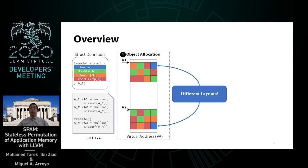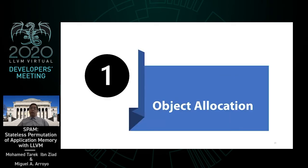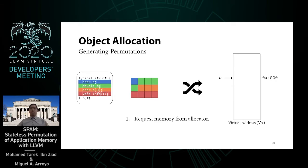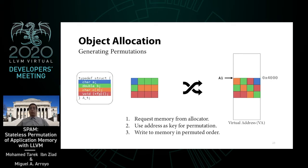So how can SPAM achieve this? Let's start with what happens during object allocation. On the left we have the struct and its corresponding memory layout, and our goal is to get to the figure on the right, where the struct contents are permuted. To do so, we first request the needed memory from the allocator and get the address. Then we use the allocation address and size as a key to generate a random permutation. Since we use the address as part of the key, there is no additional metadata. Finally, we use this permutation every time we access that particular allocation, giving us a fully permuted object.